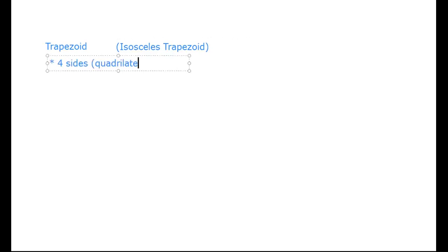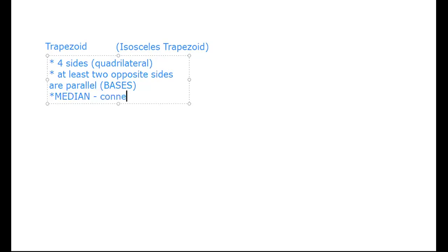At least two opposite sides, not two pairs, but one pair are parallel, and we call these the bases. You're going to have to know this in this lesson, what we're referring to when we say base. And then there's something else in a trapezoid that's called the median. And the median connects the midpoint of the side of the trapezoid.